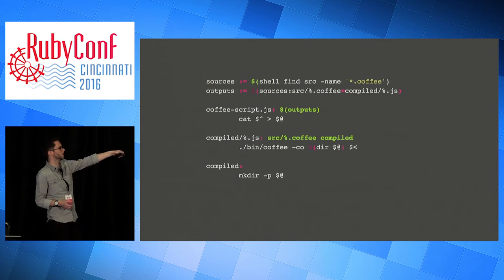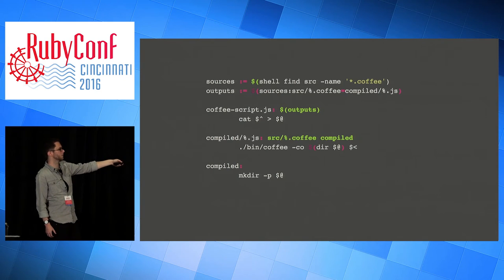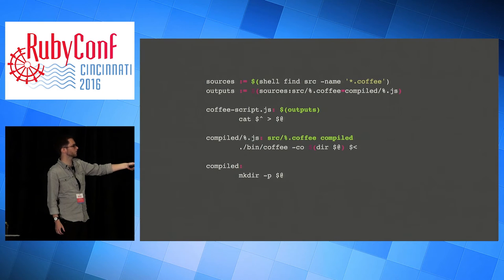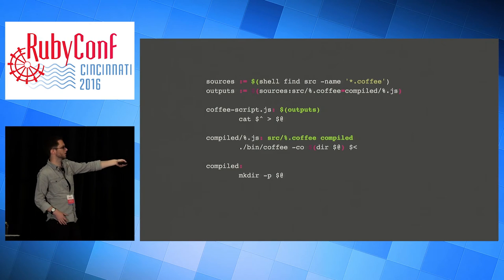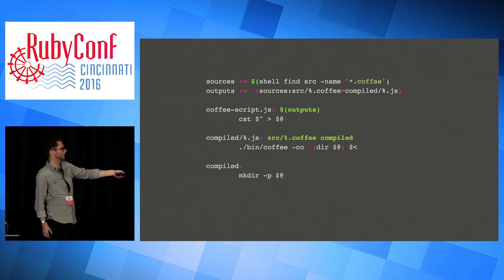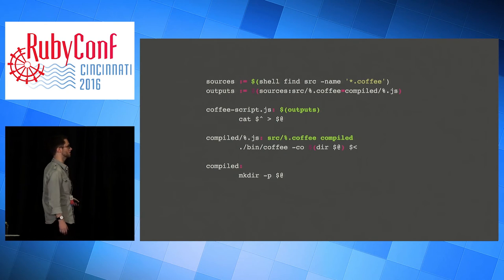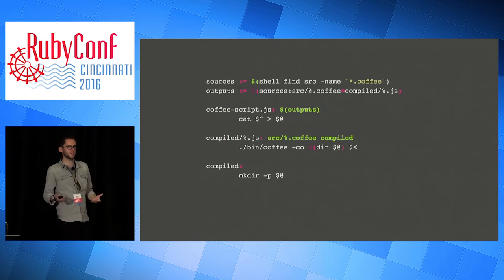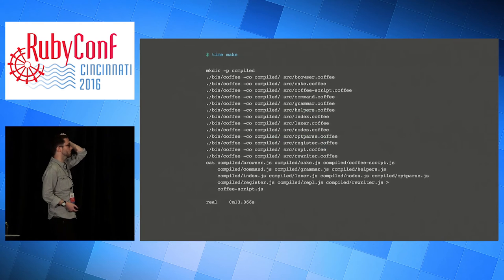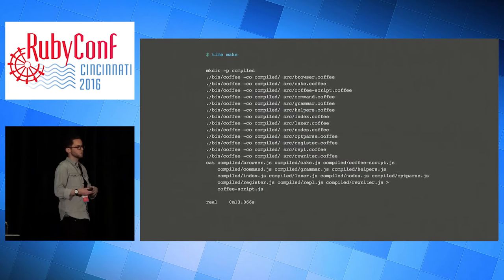A different way is to write a makefile. This says that your source files are just all the files in your project called something.coffee. The output JavaScript files are the sources with .coffee replaced by .js. To generate your main file from the outputs, you just concatenate the outputs and put those into the target. To generate a compiled JavaScript file from a CoffeeScript source file, you run the Coffee compiler on it. And your compiled directory just needs to be created with a mkdir command. This describes the same operations but in a way that lets make do interesting things with it. If you run this from a clean checkout, it does all the same stuff as the bash script and takes about the same time. But if you just touch one of the files and run make again, it will only recompile that file.